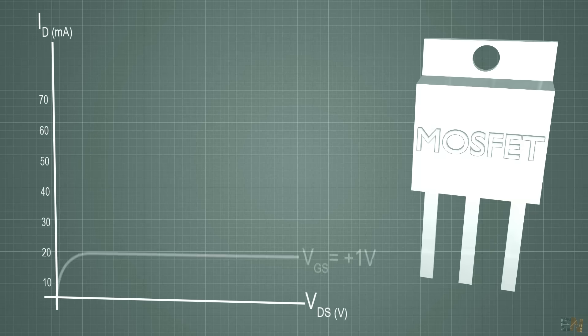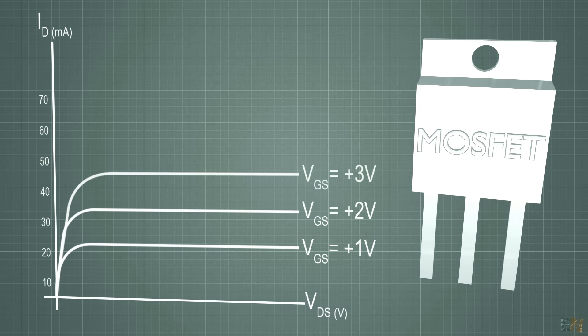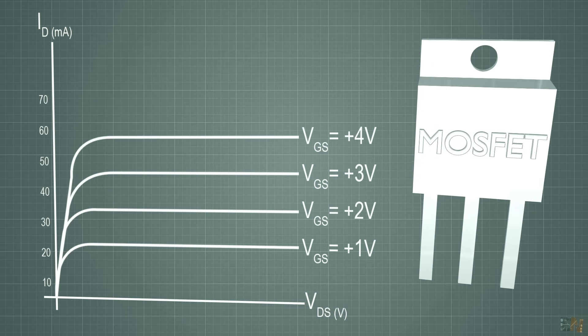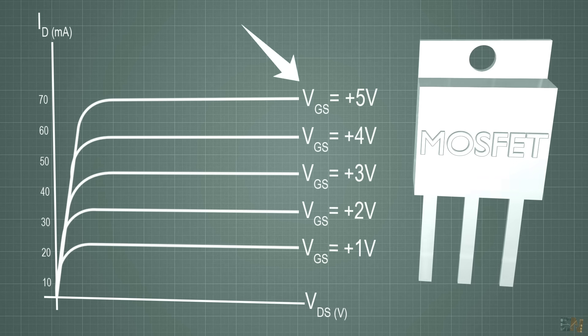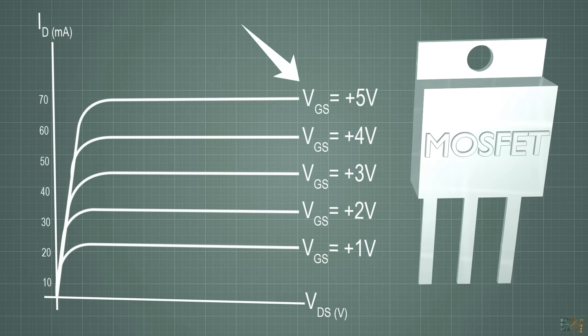Now for the MOSFET, the current flow between the drain and the source is controlled by the voltage applied to the gate. This voltage at the gate will modulate the channel resistance and thus the current through the transistor.